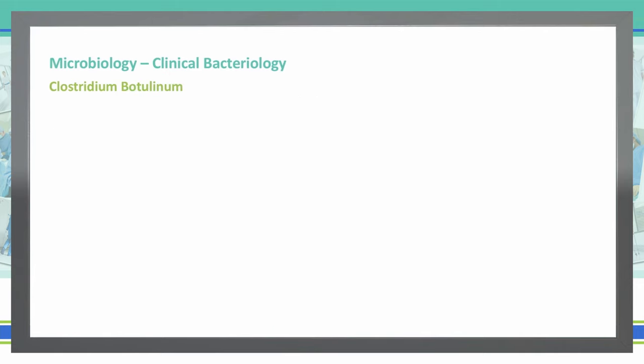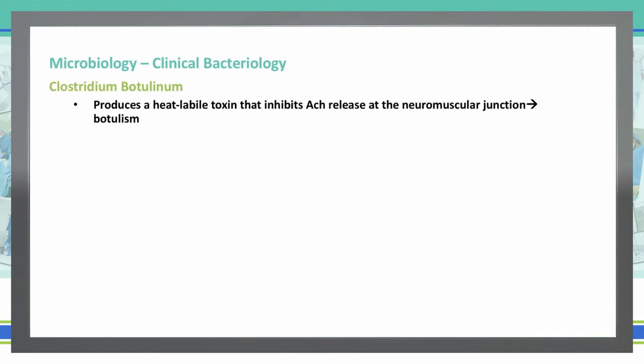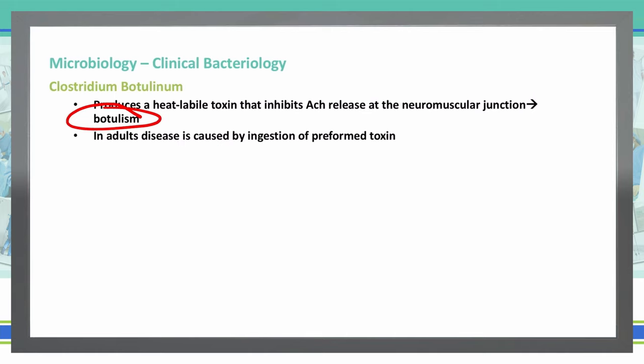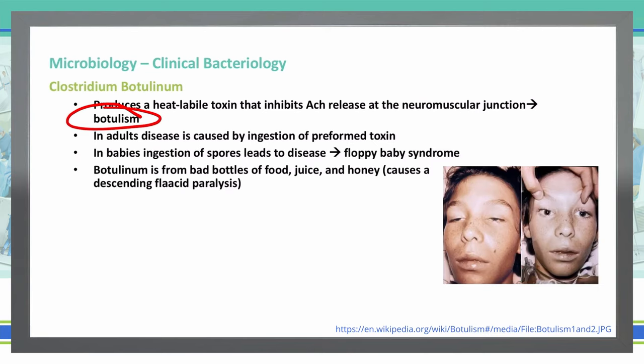Let's continue on talking about Clostridium botulinum. Clostridium botulinum is a heat-labile toxin that inhibits acetylcholine release at the neuromuscular junction, which gives us botulism. For adults, the disease is seen by ingesting that preformed toxin. However, with babies, they can get it from ingesting spores — this is what's called floppy baby syndrome.